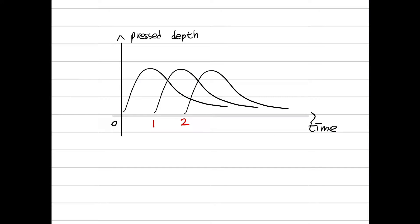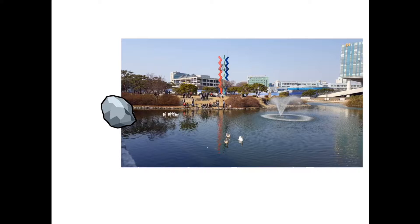If you press multiple times at 0 seconds, 1 second, and 2 seconds: because of TI, the output for pressing at one second is just shifted 1 second, and 2 seconds for the third one. And finally, from additivity, the sum of the reactions is the actual reaction of successive 3-finger pressing. Tossing a stone into a lake is also a good example — if you toss multiple stones, the waves will be accumulated. So, this is convolution.